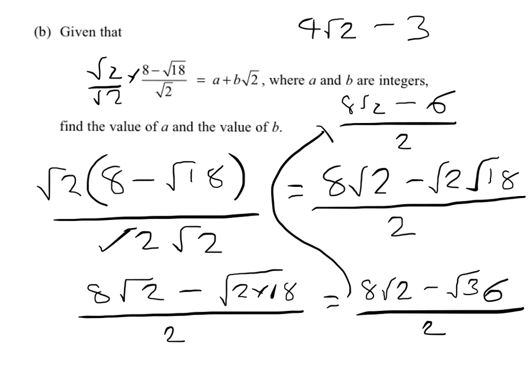We can see it's written the other way around, so we'll put the number first. It's minus 3 plus 4 root 2. So the value of A is minus 3, and the value of B is 4.